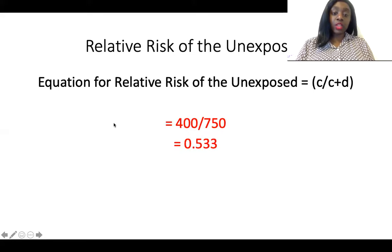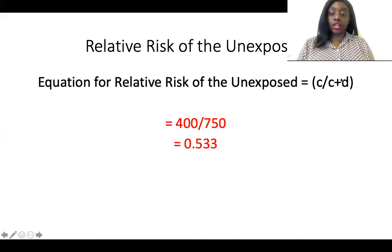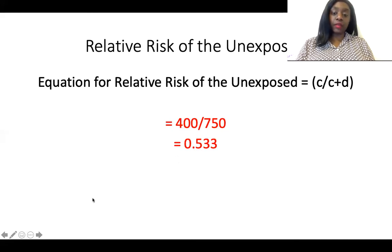The next question is the relative risk of the unexposed. The equation is c divided by c plus d, where c plus d represents the unexposed group — individuals who did not drink alcohol. Plugging in the numbers from the contingency table, that's 400 divided by 750, which gives you 0.533.